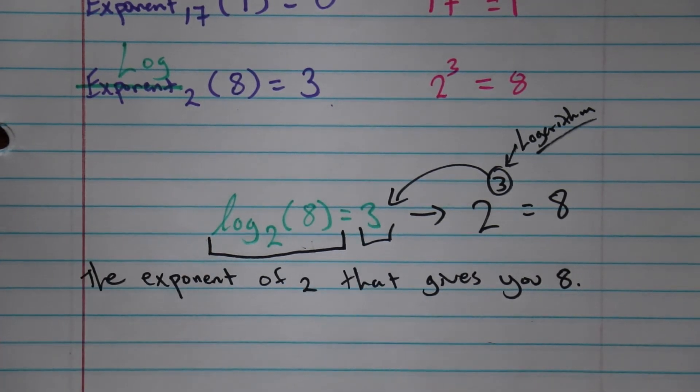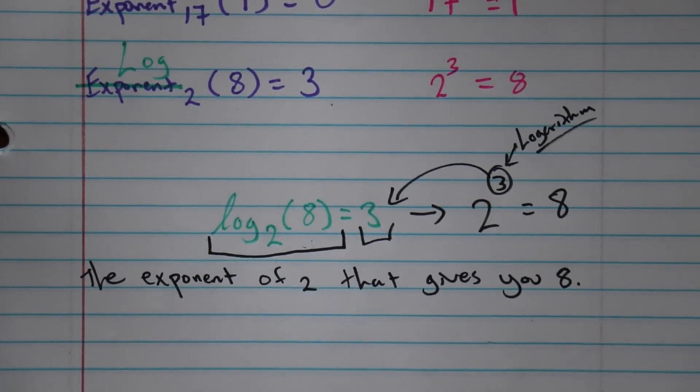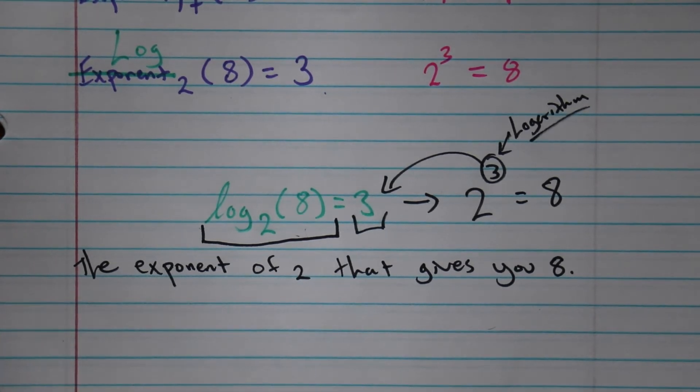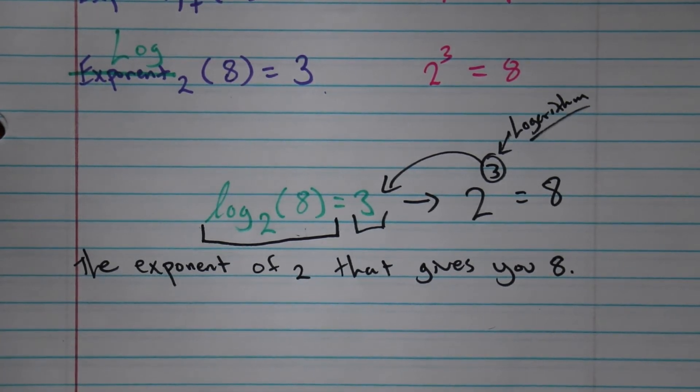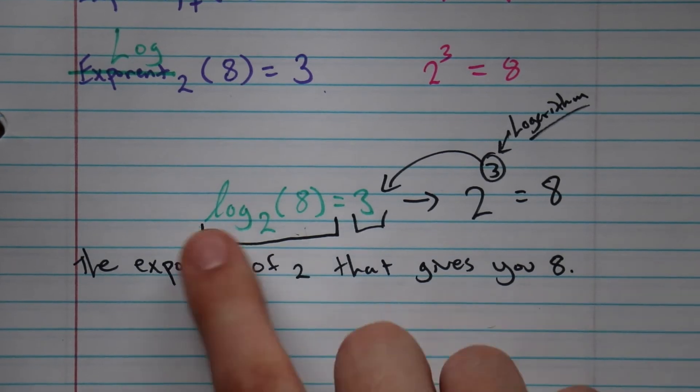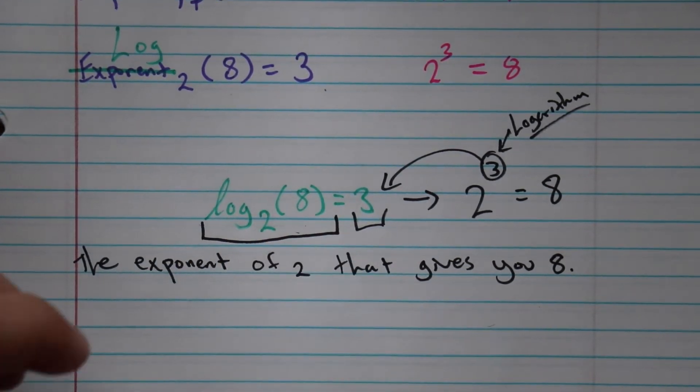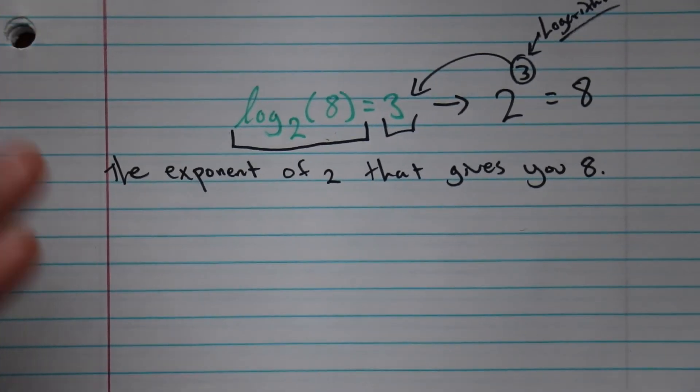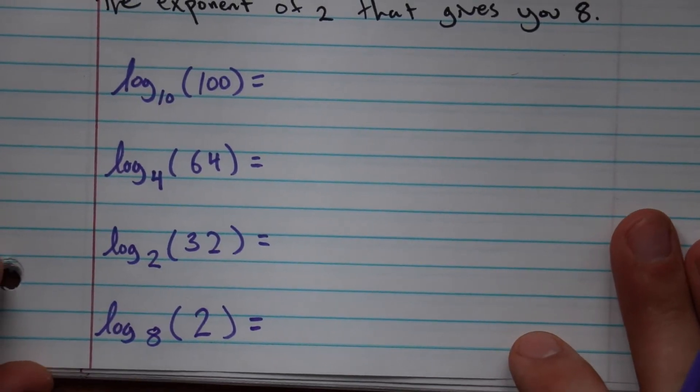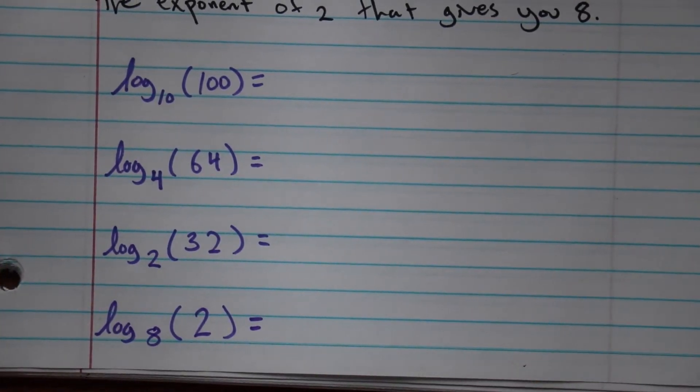This represents the exponent of 2 that gives you 8, which is 3, because we know that 2 to the third equals 8. And this is a logarithm, or at least that's what it represents. I like to think about how whenever I see the term logarithm, all it is is a fancy exponent. Let's do a few extra examples here. Maybe you want to pause the video, give it a second.